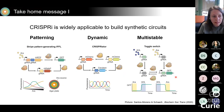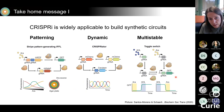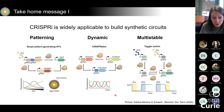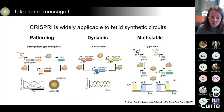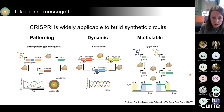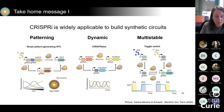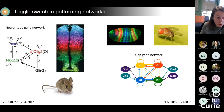As a first take-home message, CRISPRi is widely applicable to build synthetic circuits — I've shown it for stripe-forming circuits, for the oscillator, and for the toggle switch. For the last ten minutes I'd like to focus on the toggle switch in the context of patterning. The toggle switch is actually a very common motif in many natural patterning networks, for example in the neural tube gene network of the mouse or the gap gene network of Drosophila.